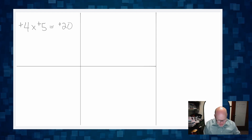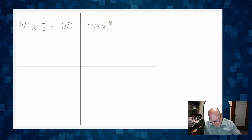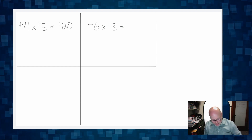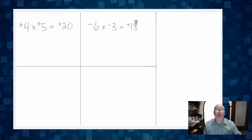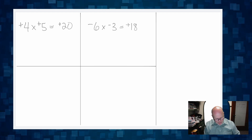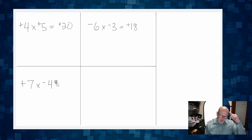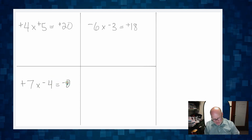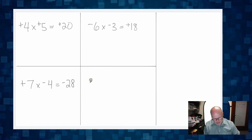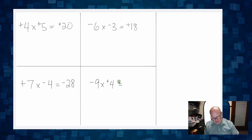Then we remind students: what about negative six times negative three? Students refresh their memory — at this point they just think they are practicing something recently learned. How about positive seven times negative four? Students say, that's negative 28. And lastly, negative nine times positive four equals negative 36.